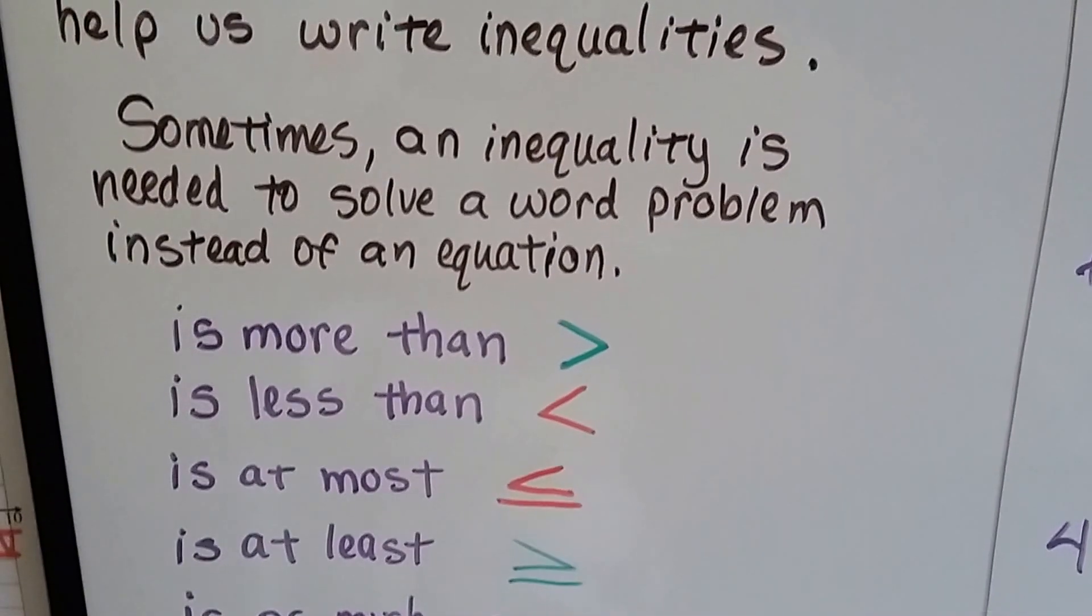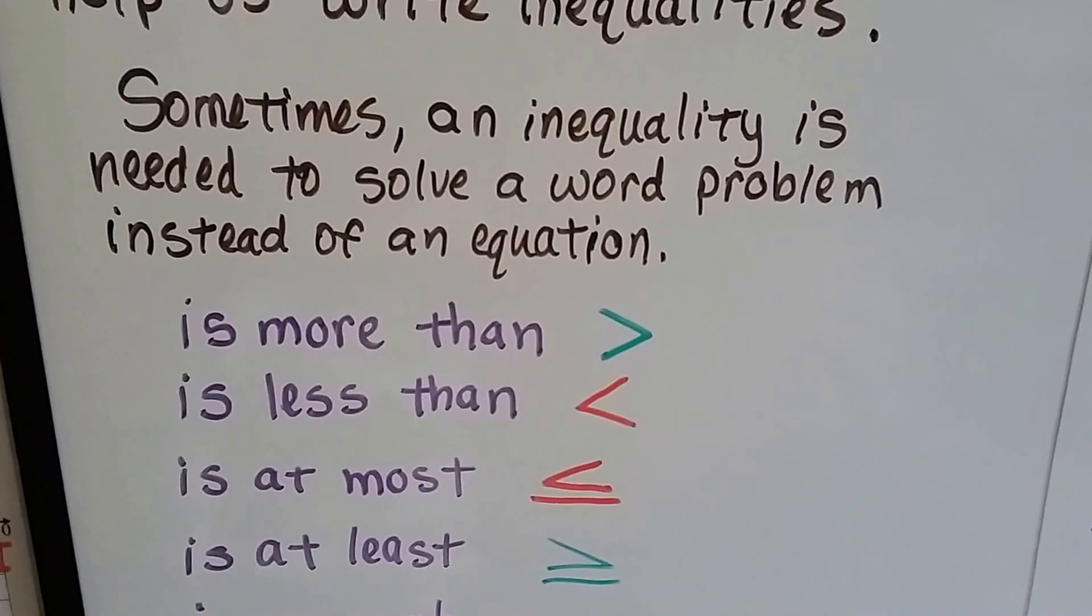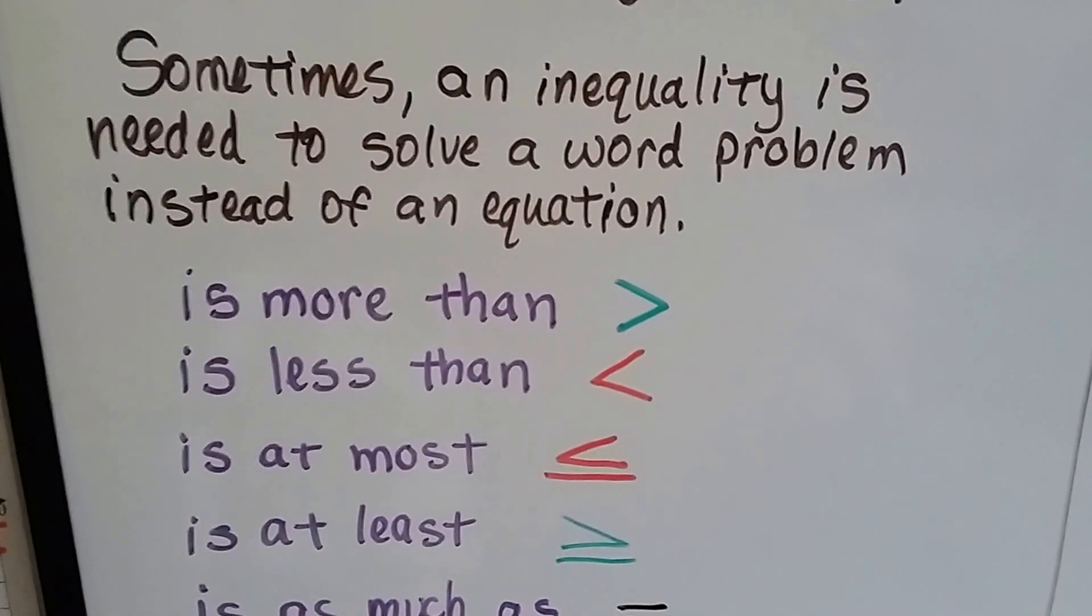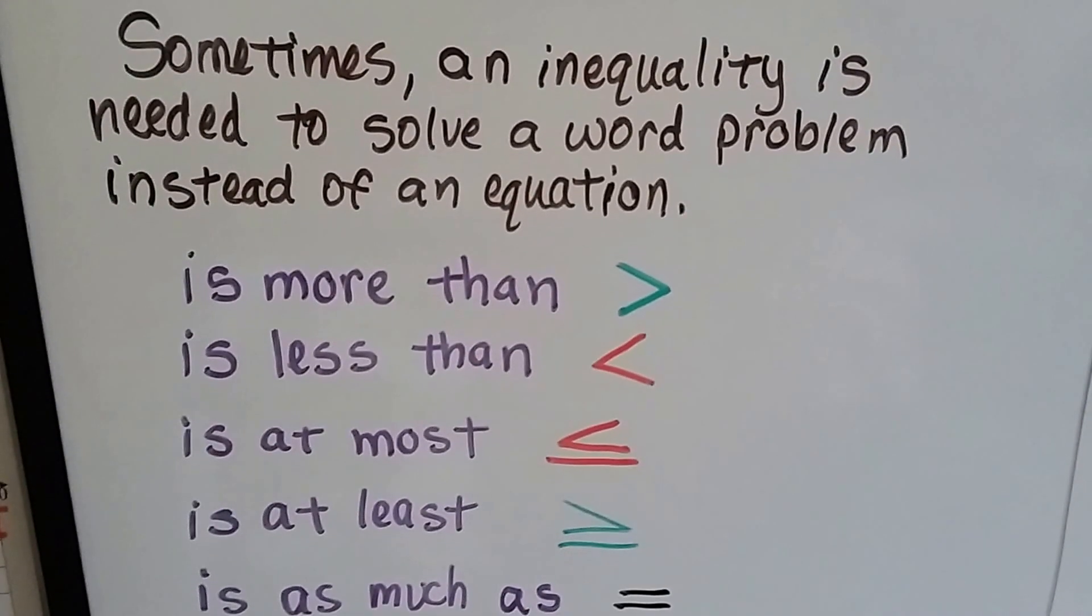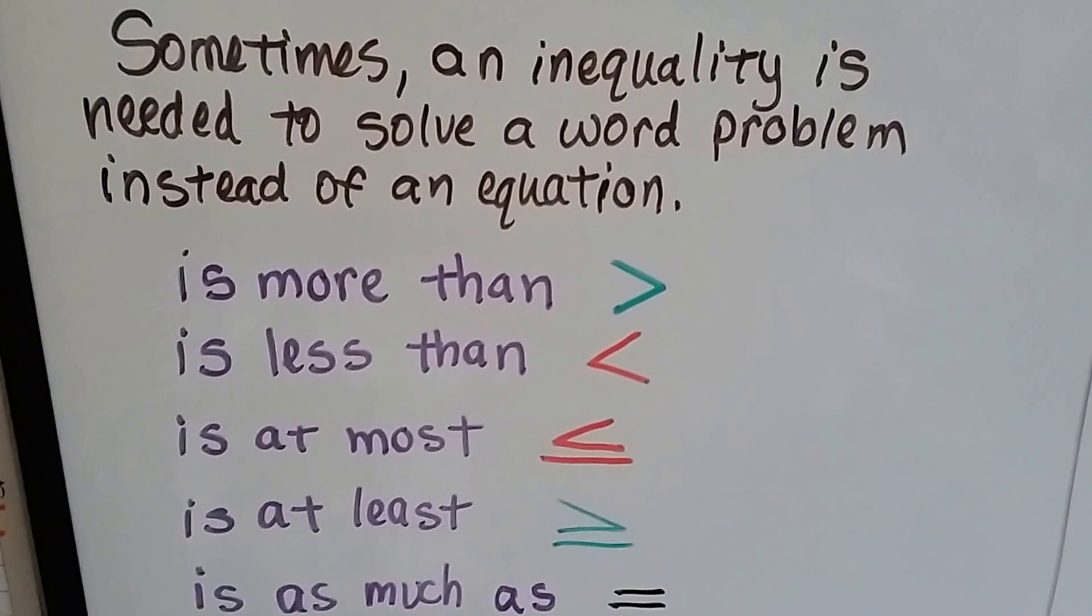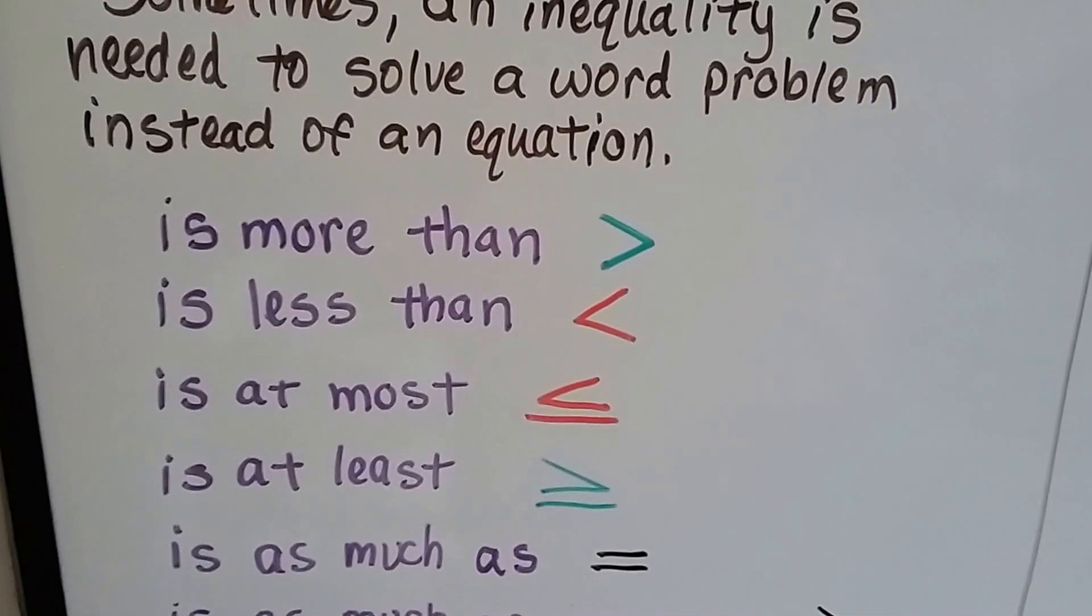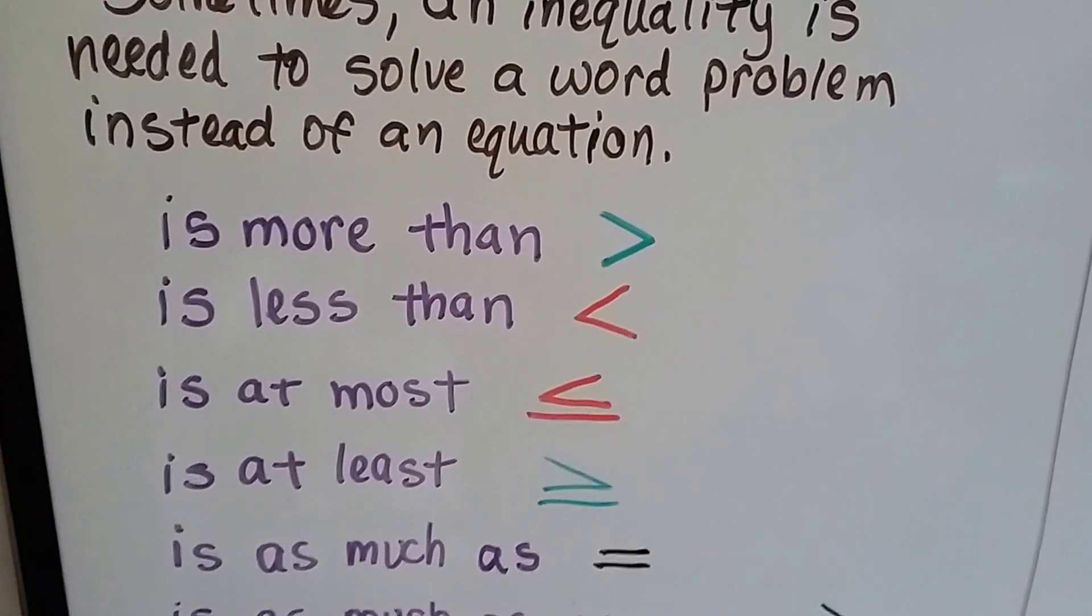Sometimes an inequality is needed to solve a word problem instead of an equation. So these are easy. If you see 'is more than,' then we know it's the greater than sign. Or if it says 'is less than,' it's a less than sign. But if it says 'is at most,' then that means it's a less than or equal to. And if it says 'is at least,' then it's a greater than or equal to.